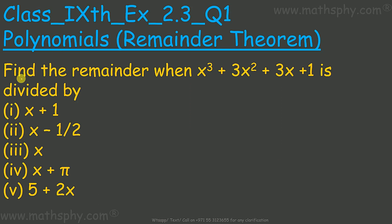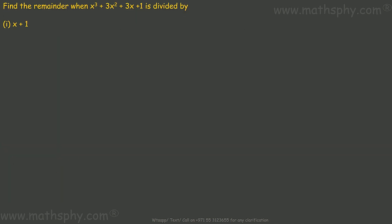This problem says: find the remainder when x³ + 3x² + 3x + 1 is divided by five different polynomials. Before solving this question, let us do a quick exercise.